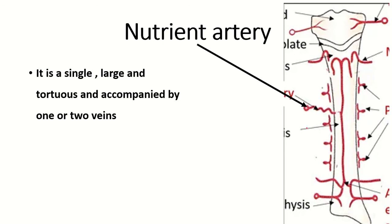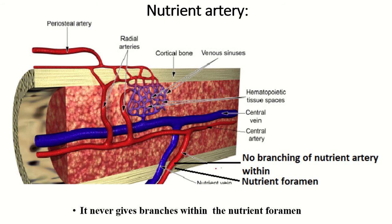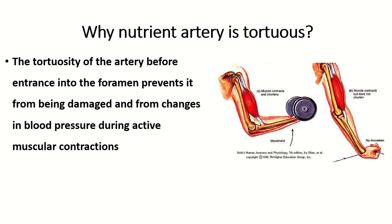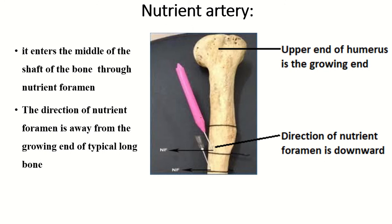When the nutrient artery passes through the nutrient foramen, it never gives branches. The tortuosity of the artery before entrance into the foramen prevents it from being damaged by changes in blood pressure during active muscular contraction.